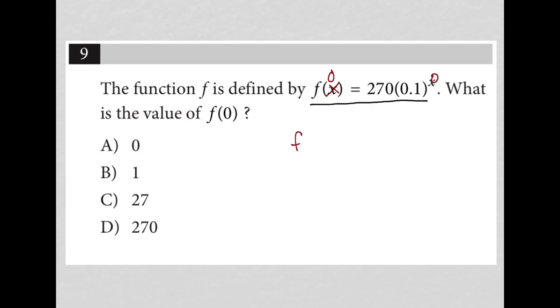So what happens when I have f(0) equals 270 times 0.1 to the 0 power? Well, 0.1 to the 0 power is equal to 1 because anything to the 0 power is equal to 1.